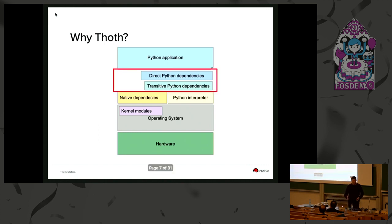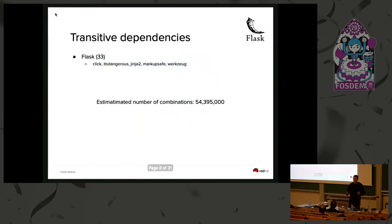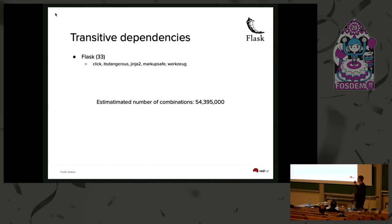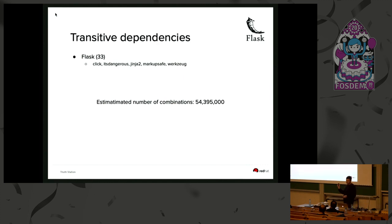Let's take a look at direct and transitive dependencies. There are 33 releases of Flask, and when you do pip install Flask, you introduce five additional packages such as click, itsdangerous, Jinja, and so on. These are all released in different versions. If we find all the versions of these libraries and calculate how many combinations there are to install Flask with its dependencies, we get to a huge number — something like 50 million possibilities to install a Flask application with different versions of its dependencies.